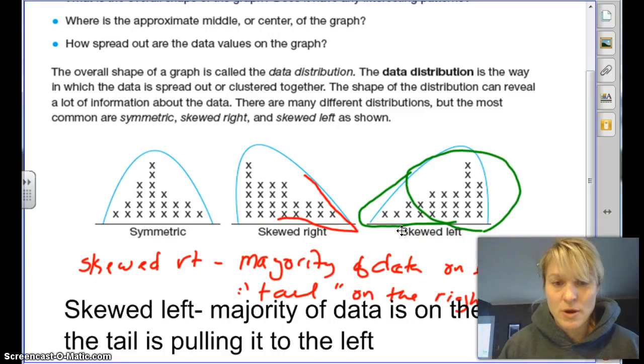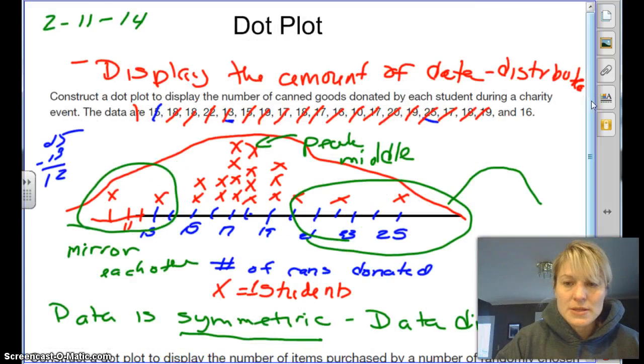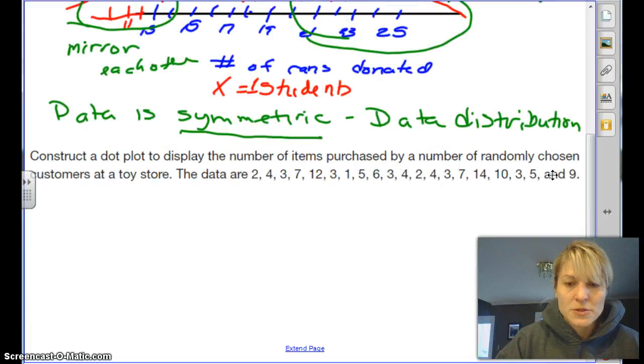So we have three things we're going to do tomorrow. You're going to have to make a dot plot and you have to describe the data distribution. It'll be skewed right, skewed left, or symmetrical. And so I did this one for you. I want you to do this practice problem on your own. I want you to make a dot plot out of these and then tell me its data distribution, how it's skewed. Make sure you say skewed. It's hard to say that. All right. Have a great night.